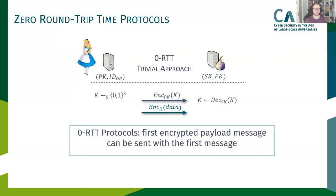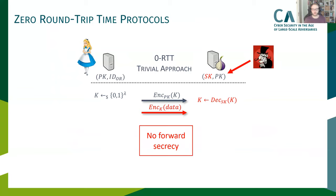Here, Alice can use the public key of the Onion Router to encrypt a randomly chosen symmetric key. Then she sends the encrypted key to the Onion Router, and additionally she can send encrypted zero round-trip time data. The Onion Router can use the secret key to decrypt the session key and then decrypt the zero round-trip time data. Interestingly, this approach was already used in 1996 by Goldschlag et al. to build a single-pass circuit construction protocol. But this approach has two major weaknesses. First of all, there is absolutely no forward secrecy for the symmetric key — any attacker that gets access to the secret key of the Onion Router can decrypt all session keys encrypted under the corresponding public key.